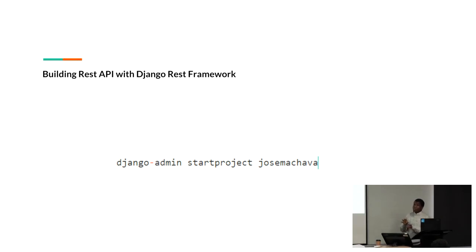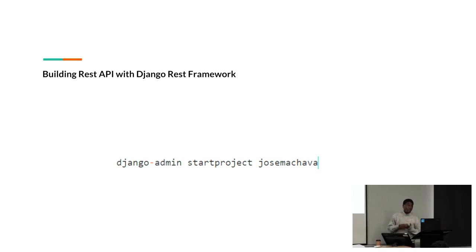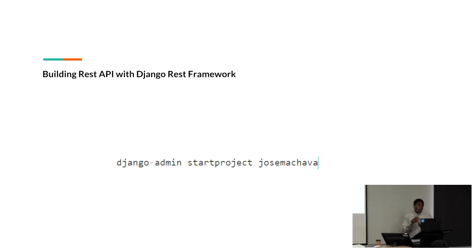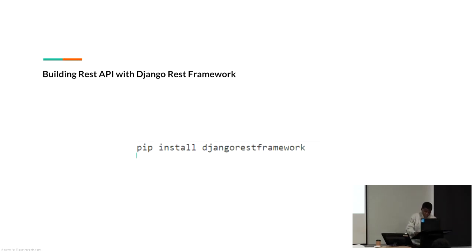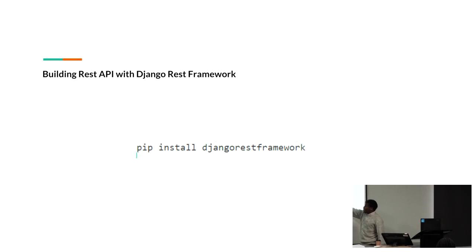Inside that project we can have different applications that handle different things. For example, now we are creating an application for a blog. I am a developer building my website, and I want to create inside that application an app called Blog, where I can write and share things about technology with other developers around the world. To build this REST API, you have to install the Django REST framework on your machine.